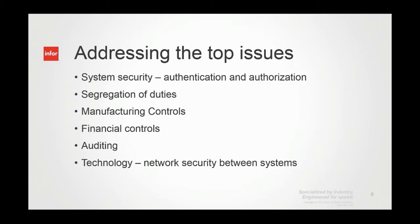So we're going to look at what we can do right now with SiteLine and CloudSuite Industrial to address some top issues. First, we'll look at system security — authentication, authorization, and controlling user access. Then we'll look at segregation of duties and how we've built personalizations to address it. We'll touch on manufacturing controls, financial controls, and auditing, and then wrap with technology before I turn it over to Tom.